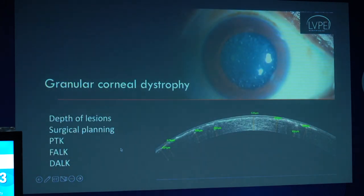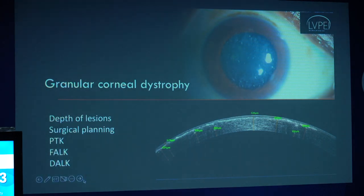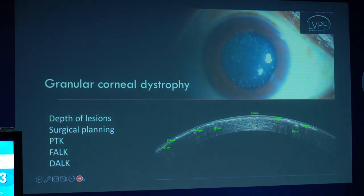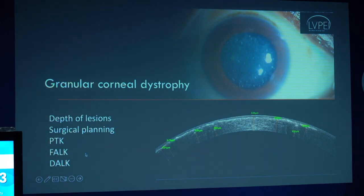An important application is in the management of corneal dystrophy, more specifically granular corneal dystrophy. Although it is primarily a clinical diagnosis, OCT helps in additionally ascertaining the depth of lesions, which further helps in surgical planning. PDK is useful only for lesions up to 100 microns, whereas for deeper lesions you would either have to resort to a DALK or a DLEK.